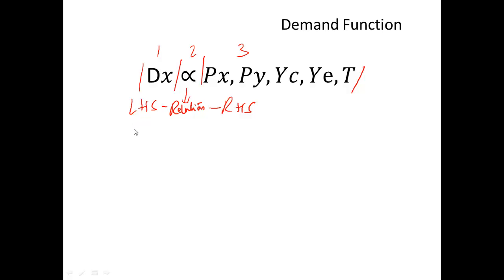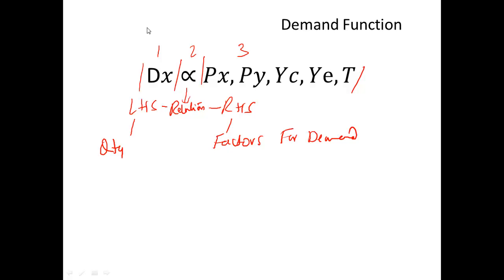The left-hand side in the demand function is the quantity demanded, and the right-hand side is the factors for demand. These factors fall into three categories: the price category (px and py), the income category (yc and ye), and qualitative factors such as taste and preferences.